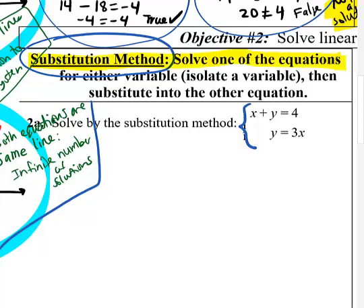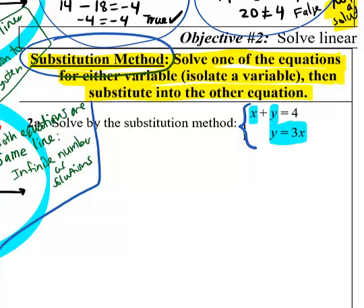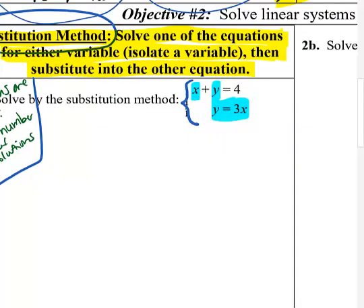The substitution method says: solve one of the equations for either variable — you can choose x or y, and you can choose either equation, so you have a lot of freedom. Once you do that, you get that variable by itself on one side, then substitute into the other equation for that variable. Looking at the system here, I notice the bottom equation already has y by itself — y is already isolated — so I get to skip a step.